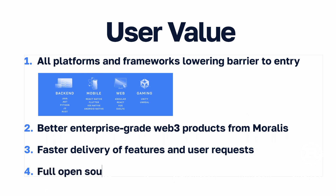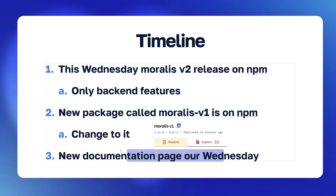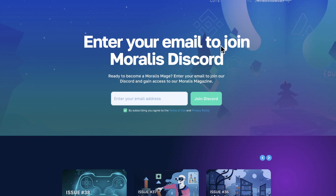To summarize: the biggest user value is, number one, all platforms are supported, lowering the barrier to entry. This allows Morales to focus on enterprise-grade Web3 backend products, enabling fast delivery of new APIs and Web3 features. And there is full open sourcing of the current Morales stack so you have full control. On the timeline: this Wednesday, already in two days, we are releasing Morales version 2 on NPM — a pure backend library with only backend features. If you want to keep using Morales as before, you need to change your import to Morales version 1, which is now a separate package on NPM. Join our Discord at morales.io/join-discord for AMAs and clarifications.